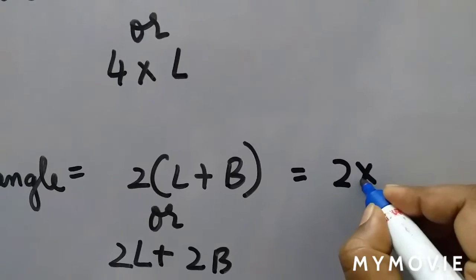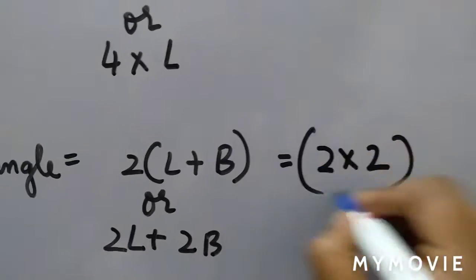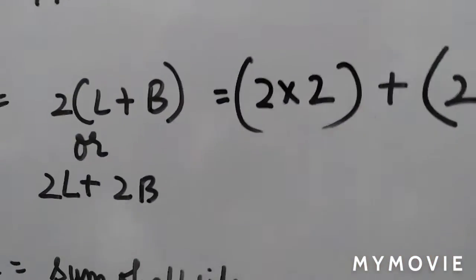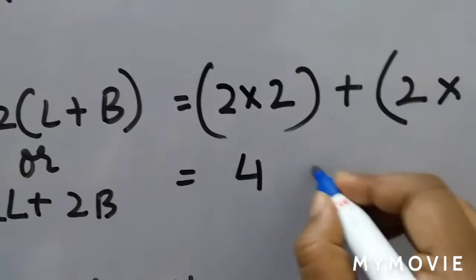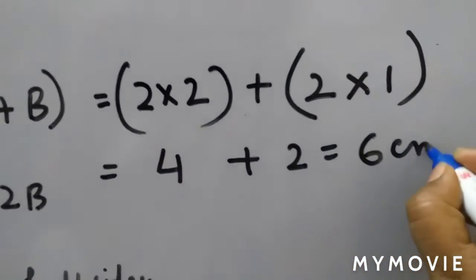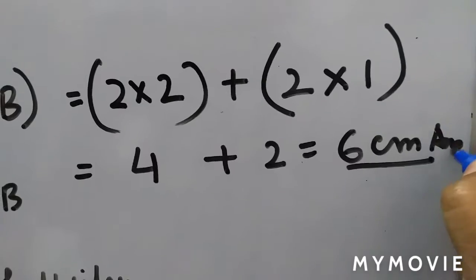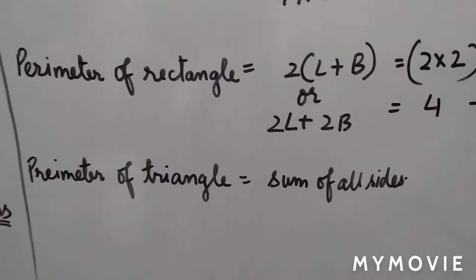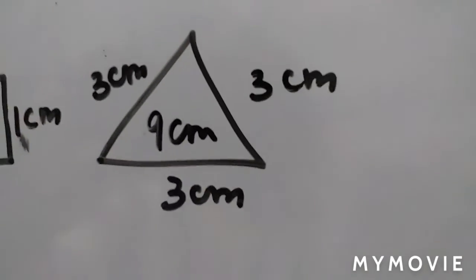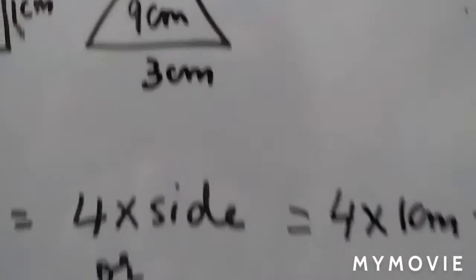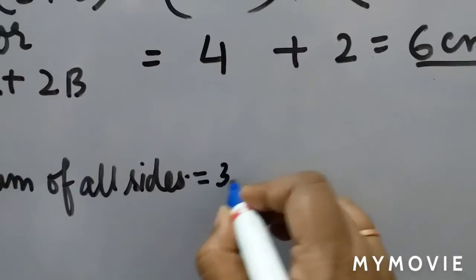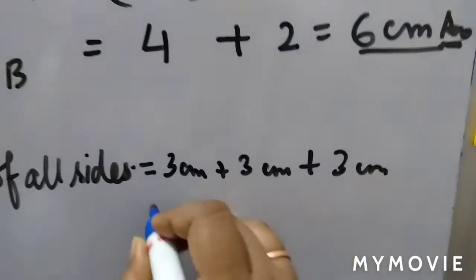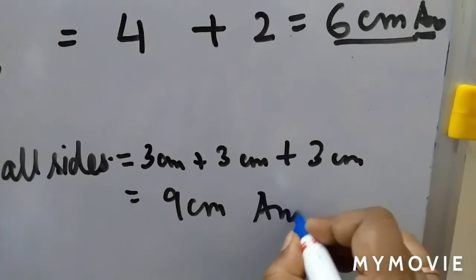This means you multiply 2 with length. Length given is 5 centimeters. Then multiply 2 with breadth, which is 1 centimeter. This becomes 10 plus 2, which is 12 centimeters. Wait, let me recalculate: 2 times 5 is 10, no, the length here was 2 centimeters and breadth was 1 centimeter. So 2 into 2 is 4, plus 2 into 1 is 2, total is 6 centimeters. This is your answer.